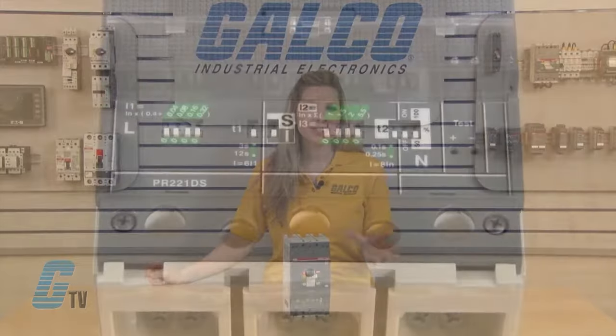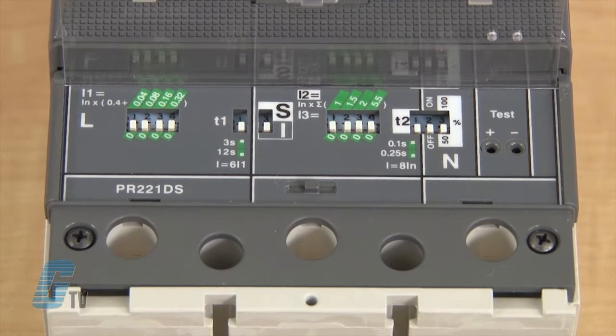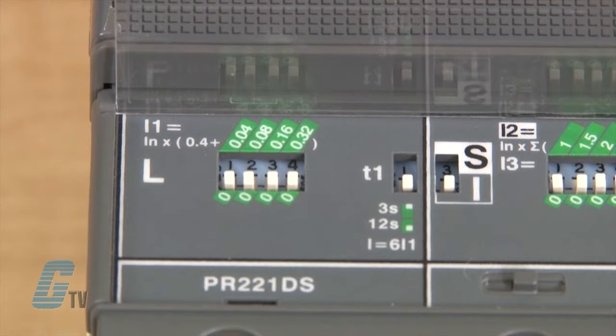My first set of dip switches is labeled L for protection against overloads. Here I can set my tripping threshold which is set to 0.4 of the maximum current rating of the circuit breaker when all the dip switches are set down.